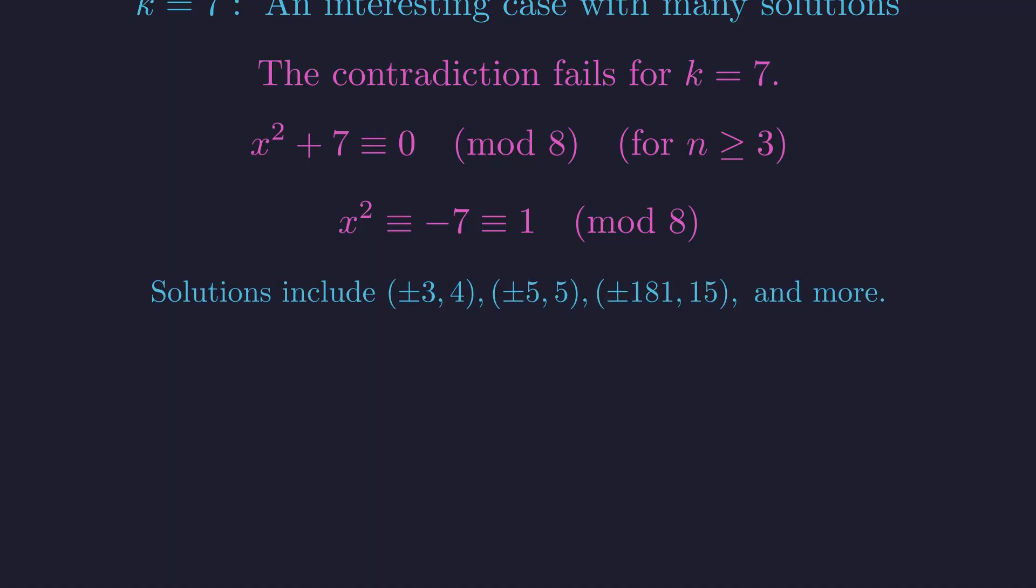This explains why k equals 7 has many known solutions, including plus or minus 3 for n equals 4, plus or minus 5 for n equals 5, and plus or minus 181 for n equals 15.